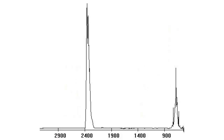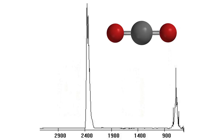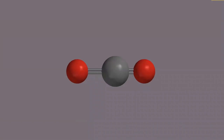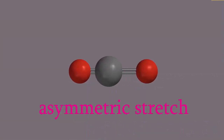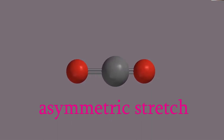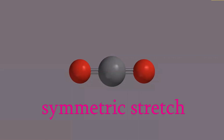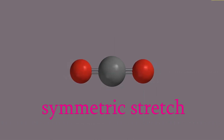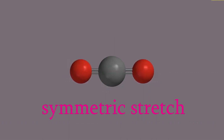Now, here's the IR spectrum of carbon dioxide. CO₂ is a linear molecule with three atoms, so it can have 3 times 3 minus 5 vibrations, which is 4. But it looks like this spectrum has only two peaks — why is that? Well, here's one of those four vibrations. You can see that it's an asymmetric stretch, because one bond gets longer as the other one gets shorter. Next, here's the symmetric stretch. But notice that, unlike the asymmetric stretch, the electric dipole moment doesn't change in this vibration. The charge distribution is symmetric around the center of the molecule throughout the vibration, so this vibration doesn't appear in the spectrum.